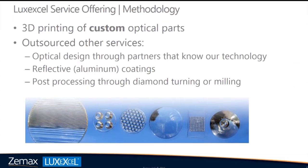At the moment we do not sell the hardware. What we do is 3D print custom optical parts — we don't work with standard optics. We ask customers to provide a CAD file of the optical part and then we simply print it. There are quite a lot of tricks behind our process. We also offer some optical design services through design partners who know our technology boundaries, reflective coatings through a partner, and post-processing through diamond turning or milling.